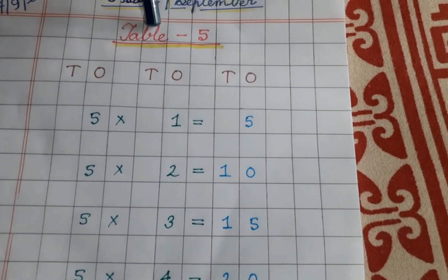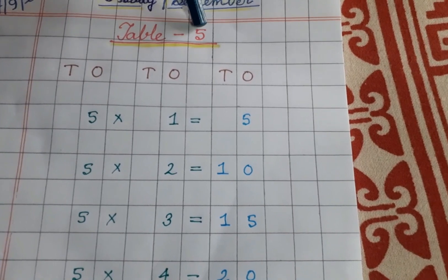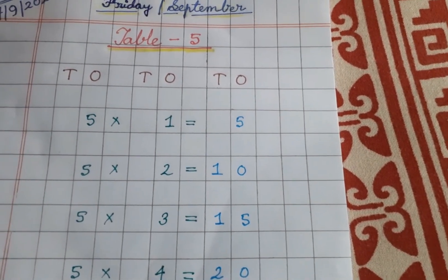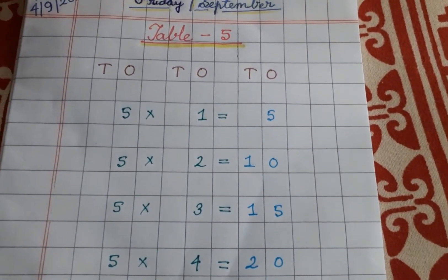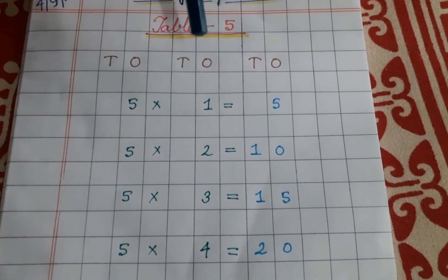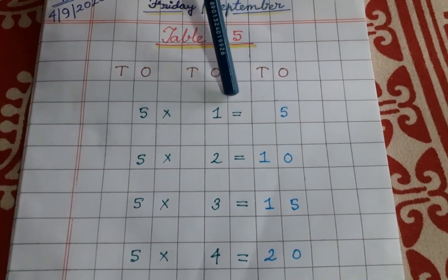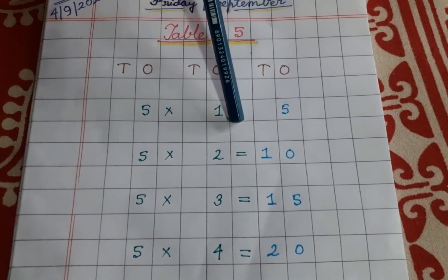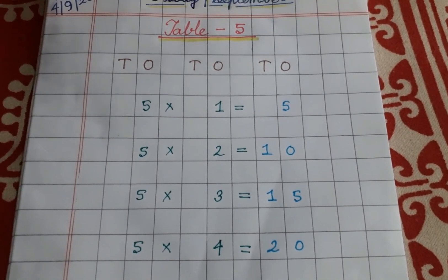T-A-B-L-E, table hyphen 5 - that means table of 5. Then you will write the ones and tens columns, one line gap, again ones and tens. Then you have to give the gap for equals, and then again ones and tens for the answer.